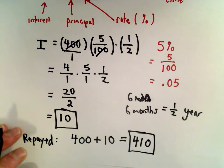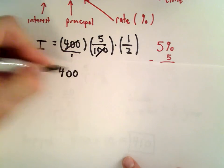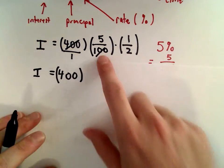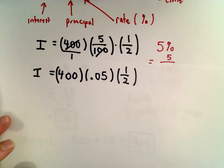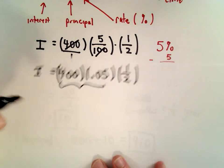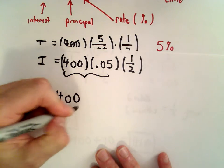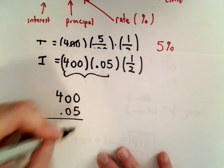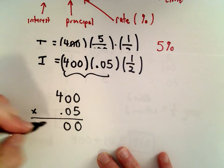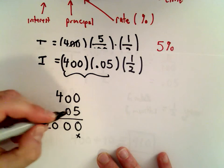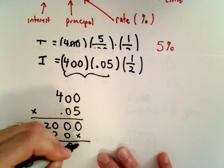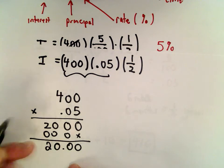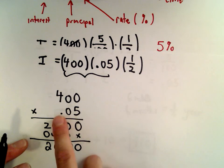Let me rework this using decimal form. Five percent is 0.05, times 1/2. Maybe you would rather do it this way instead of using fractions. I'm going to multiply 400 by 0.05. Five times 4 is 20, and moving the decimal place two places to the left, we get 20.00.